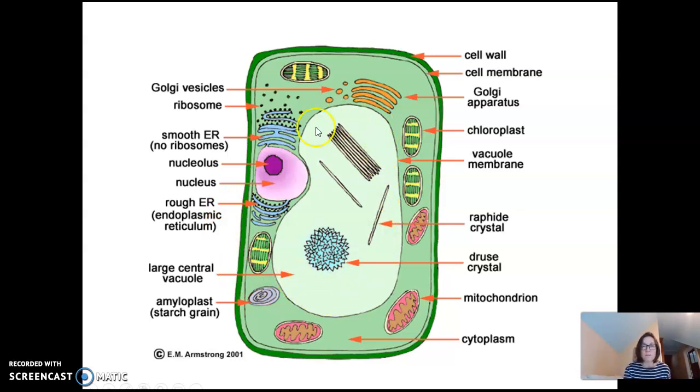I also have this big open space here and this is a large central vacuole. This is a storage section for the cell. Plants have this. Animals do not. Large central vacuole. There are some little things in here that we're not going to really focus on, the crystals. We can ignore those.